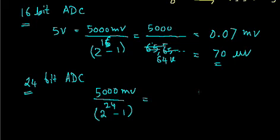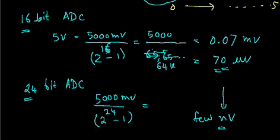So, this comes out to be extremely small. It is right now 70 micro volt for 16-bit ADC, it will be hardly few nano volts for 24-bit ADC. You can compute that yourself whenever you find time.